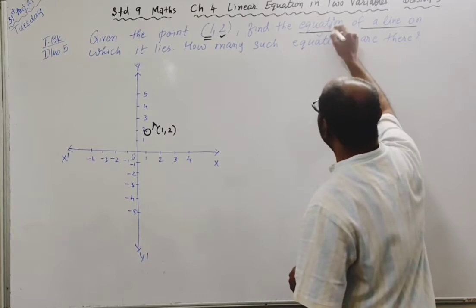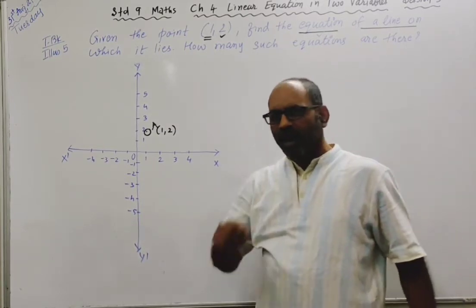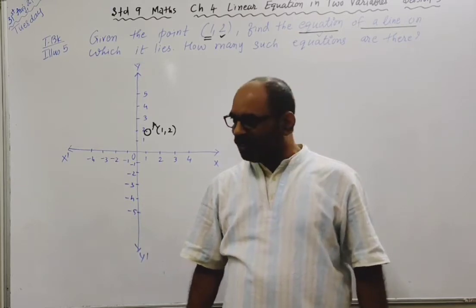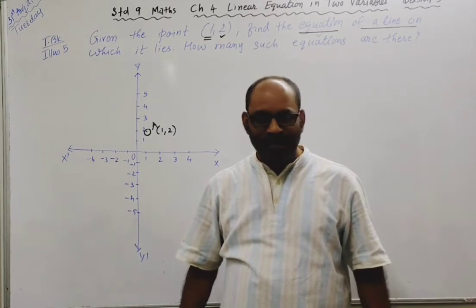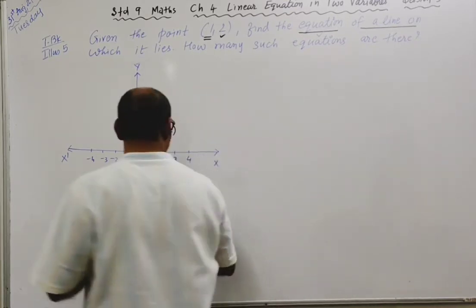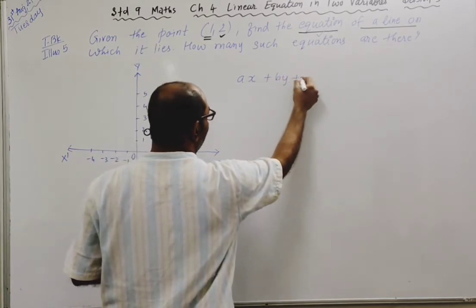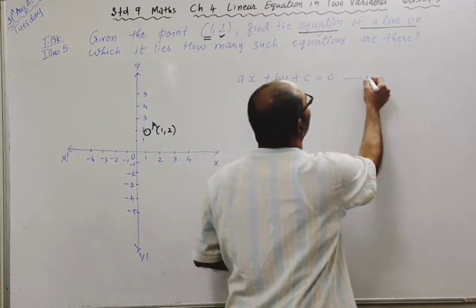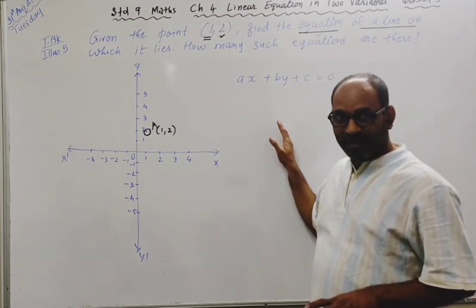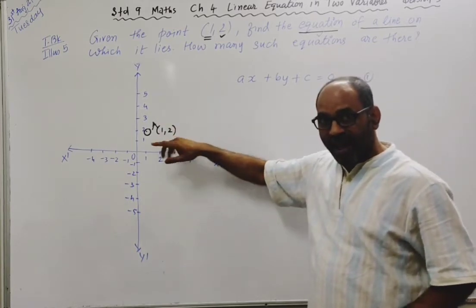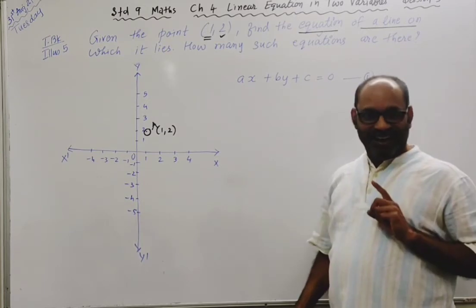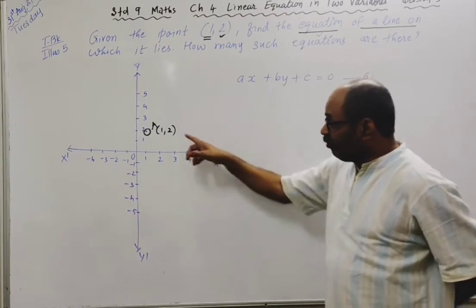You have to give the equation. Any straight line is actually a graph of a linear equation in two variables. Now what is the standard form of linear equation in two variables? ax + by + c = 0. This is the standard form. How many lines will have point A on them? Infinite lines. So how many equations? Infinite. You have to give one equation.